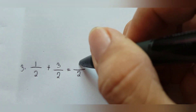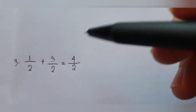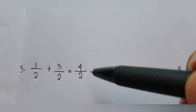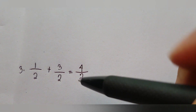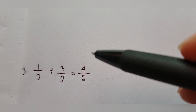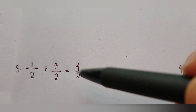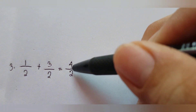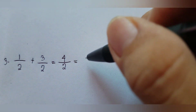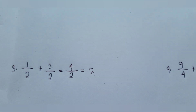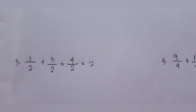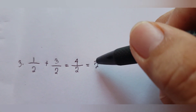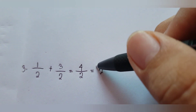Since four is divisible by two, we can simplify four over two to its lowest term: four divided by two equals two. So the final answer for example number three is two.